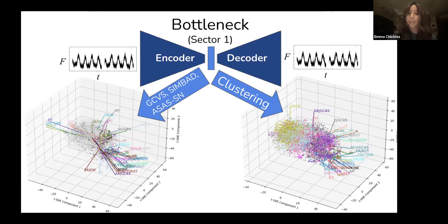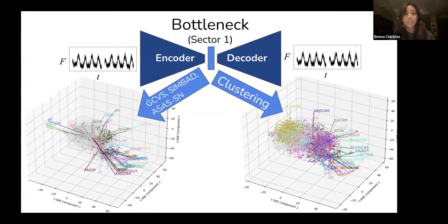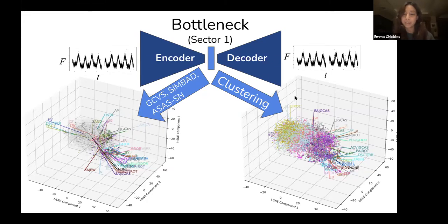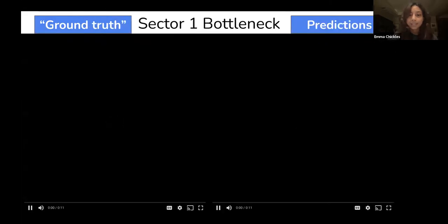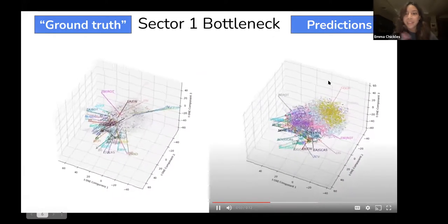Our goal is to automate classification of stellar variability, assigning each short-cadence light curve to a variability type. If a cluster includes an object with a known variability classification, we assume all objects in that cluster share the same variability mechanism. As a result, from the 16,000 stars in sector one — 500 with catalogued classifications — our clustering analysis yielded 10,000 labeled stars. This demonstrates how our pipeline can greatly augment existing variability catalogs.